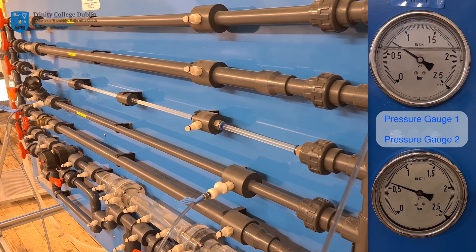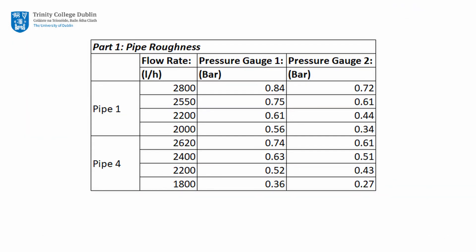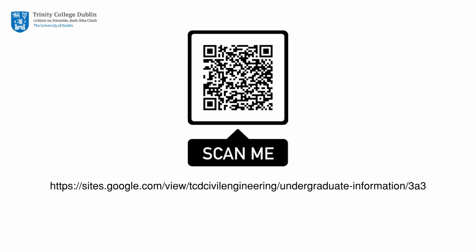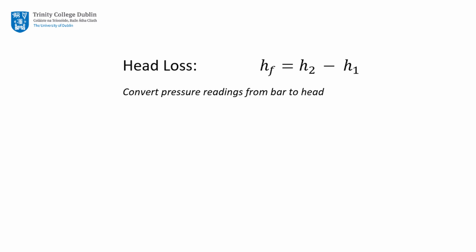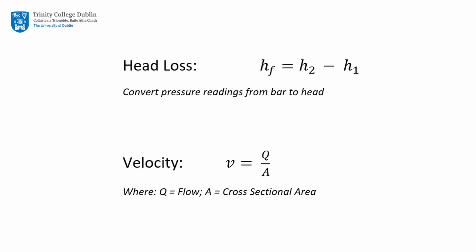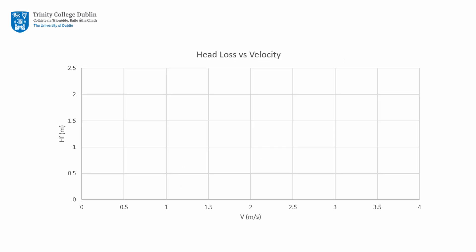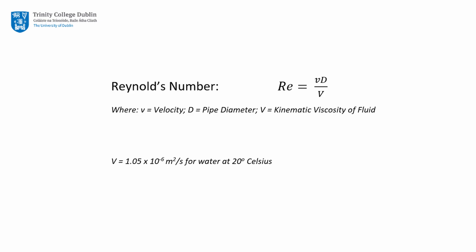Let's get started. The table on screen presents the data obtained whilst running this experiment. This data, and all other relevant data for this lab, may be accessed by following the QR code or URL link on screen and in the description box below. From these measurements of head and flow, please calculate the head loss in meters and velocity in meters per second using the following formula. Plotting HF against V will clearly illustrate the effect of surface roughness on head loss. Please also use the following equation to determine the Reynolds number of flow in each pipe under the various flow rates. Is the flow laminar or turbulent in each case?